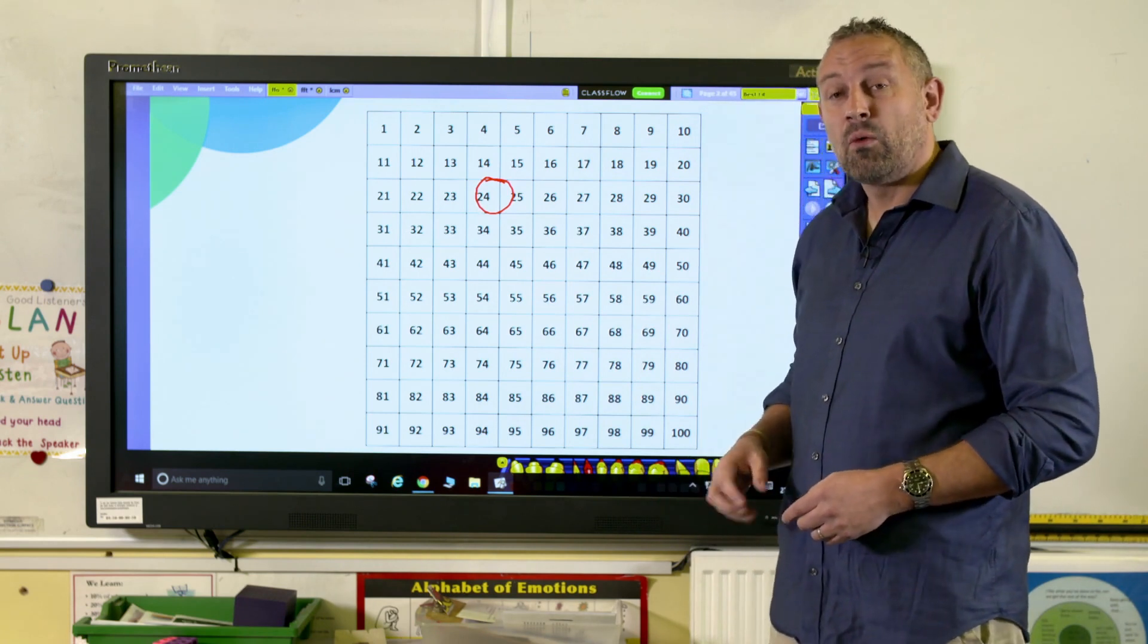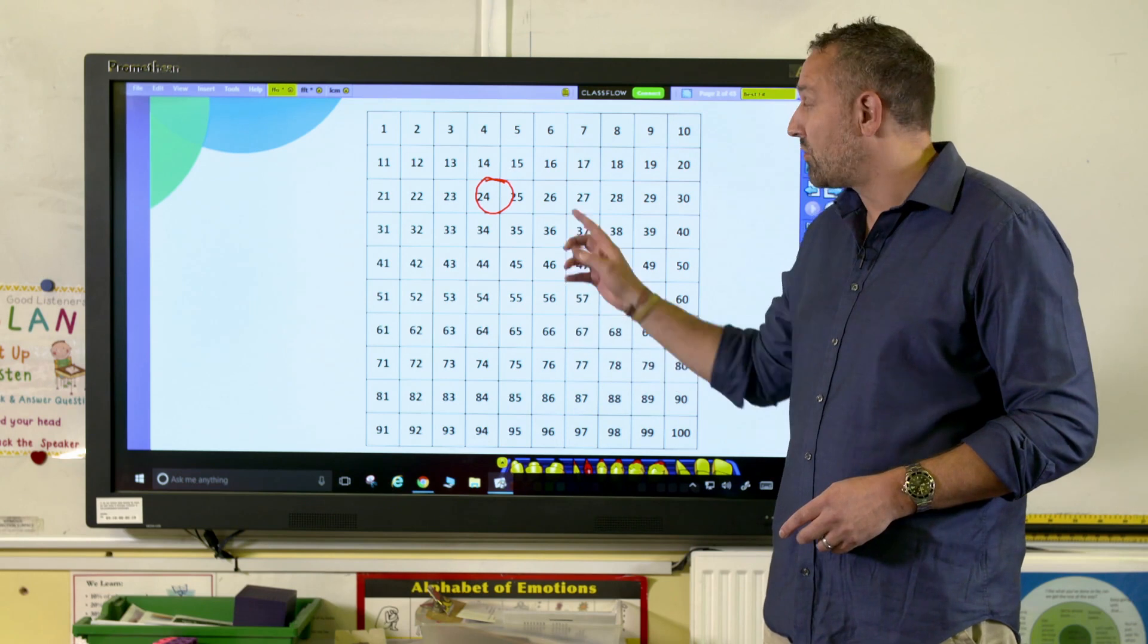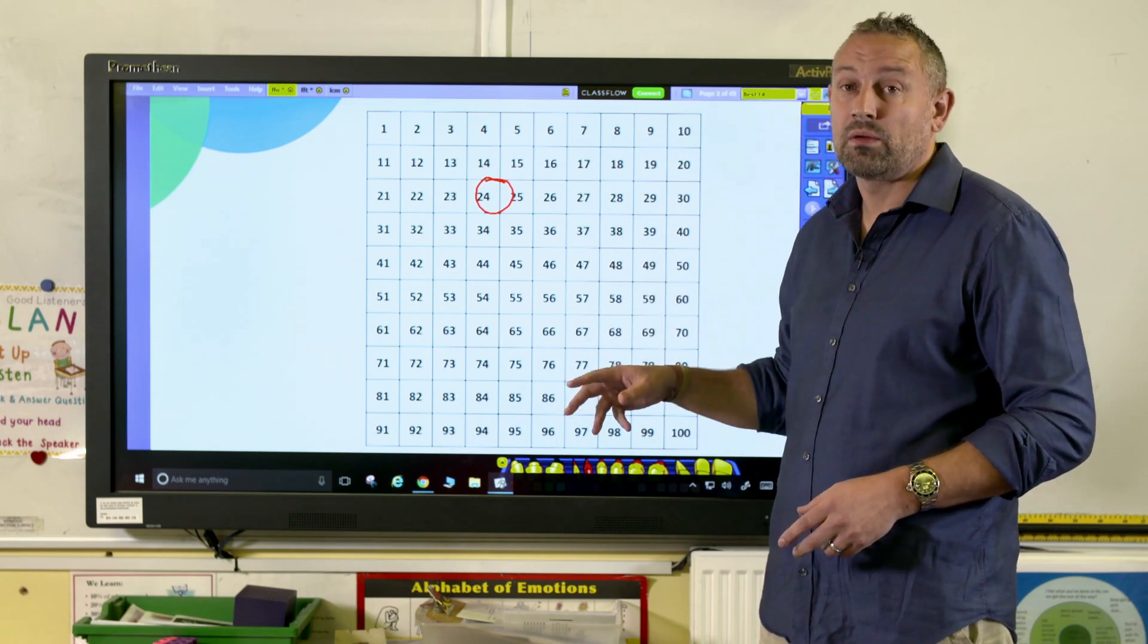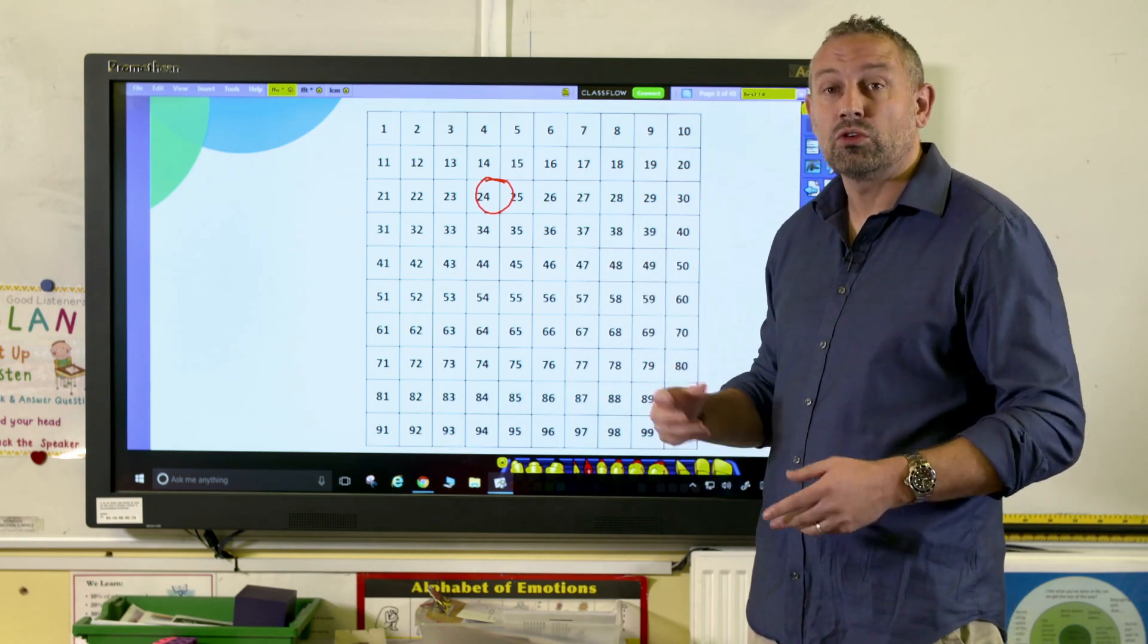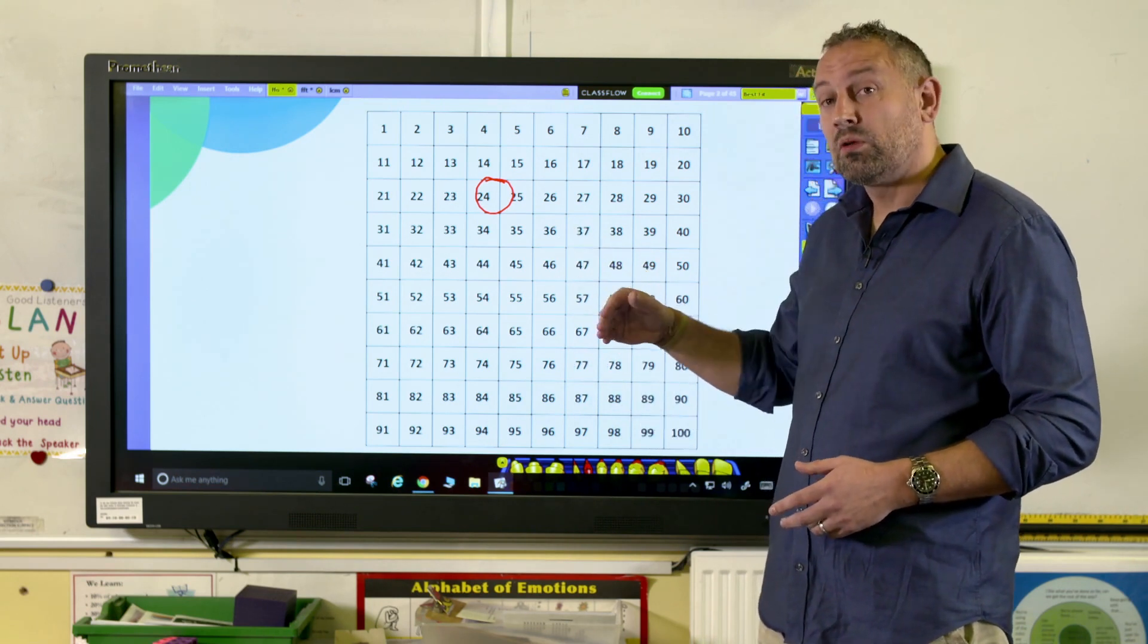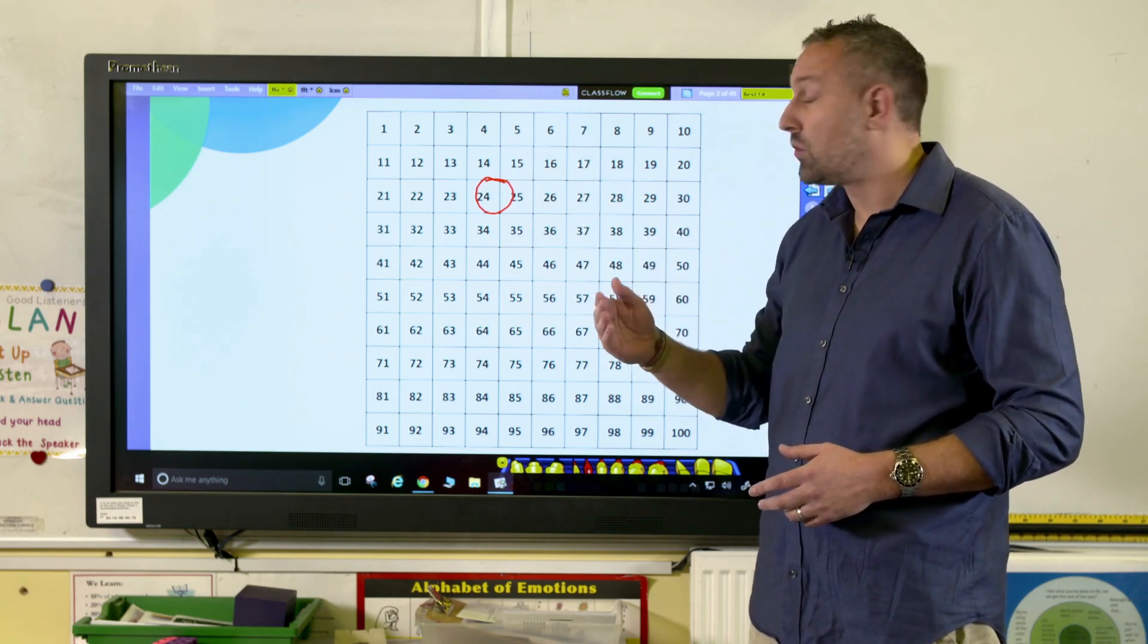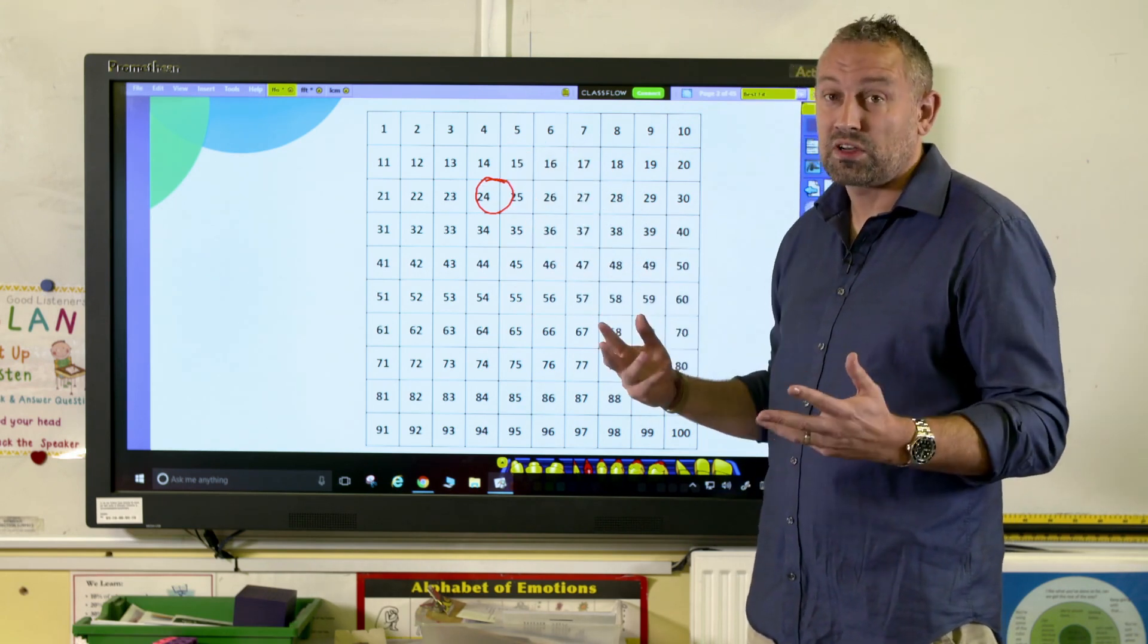What the other child has got to do is they've got to say a factor or a multiple of that number. So as a factor they could say one, or 24, two, 12. Or as a multiple, so that's the numbers that go up in the 24 times table, so 24, 48, 72, for example.